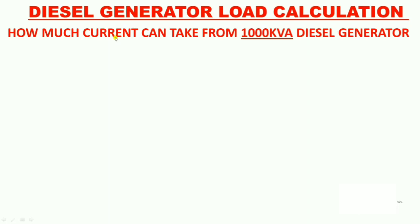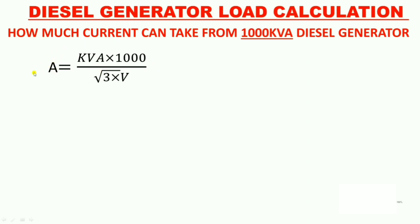First, understand which formula is used for this calculation. This formula is generally used for calculating the full load current of a diesel generator. In this formula, A stands for full load current in amperes, kVA is for the diesel generator rating, √3 is used for three-phase supply, and voltage is the voltage generated by the diesel generator.